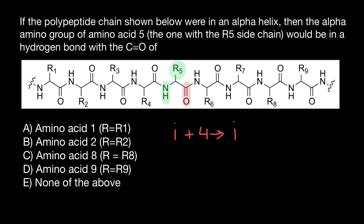And here is where you can get into the trap. We have amino acid number five — we put five here plus four — that means it's going to make a hydrogen bond with the carboxylic group of amino acid number nine. So here's the carboxylic group, and we would expect a hydrogen bond like this. But actually, this is not so. How come? How come that this formula is not working anymore?